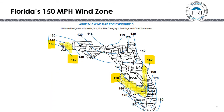Here is the ASCE 7-16 wind map for Exposure C found in the FRSA TRI 6th edition on page 32. You can see the 150 mile per hour wind zone includes a little slice of the panhandle and cuts through central Florida.